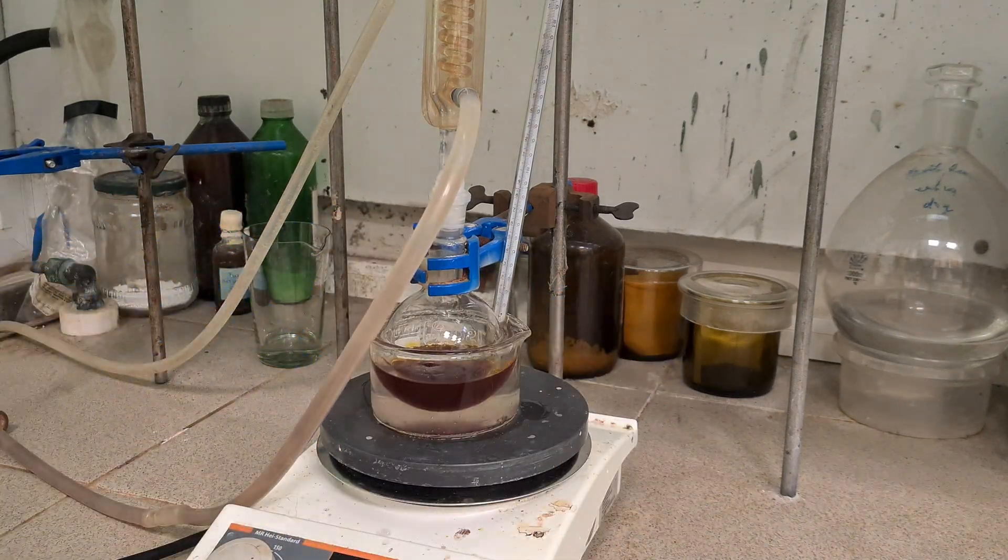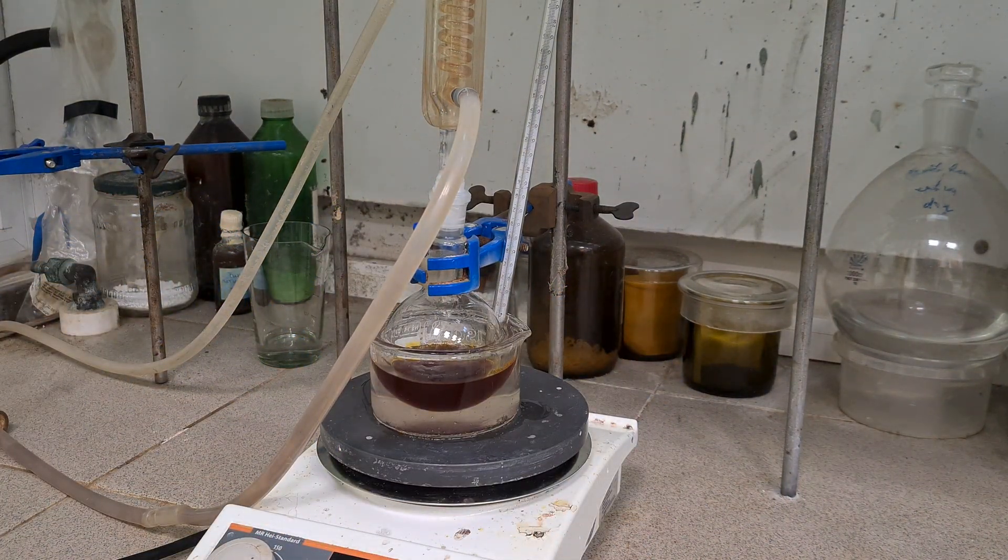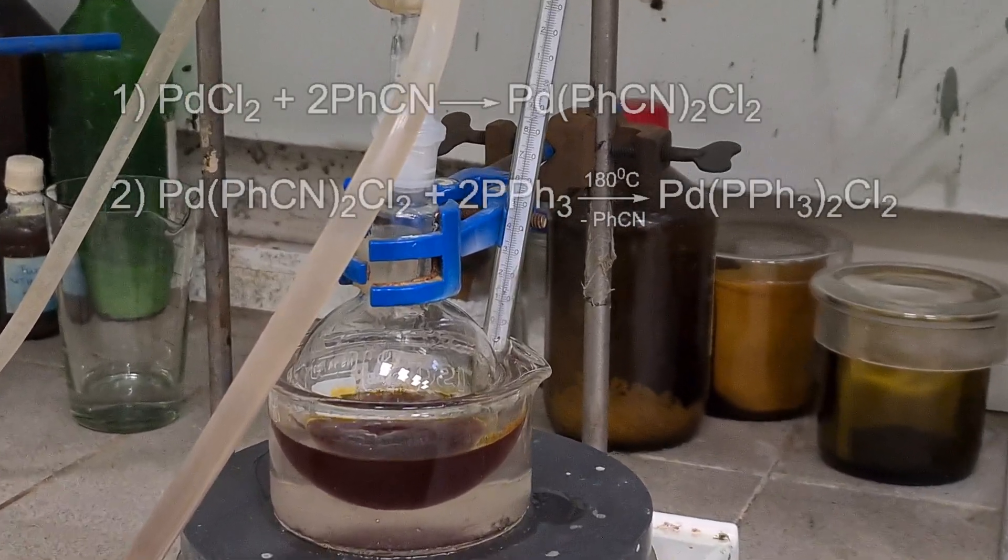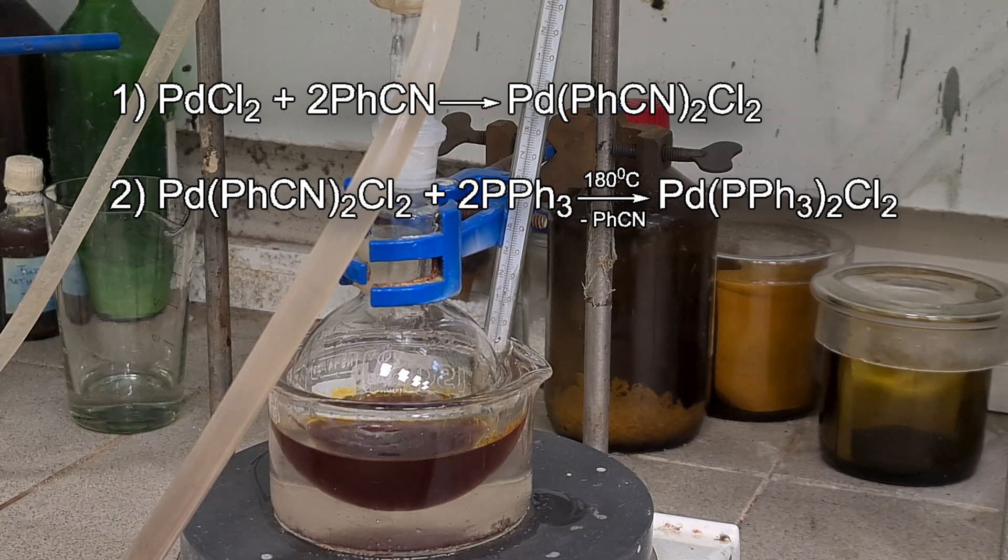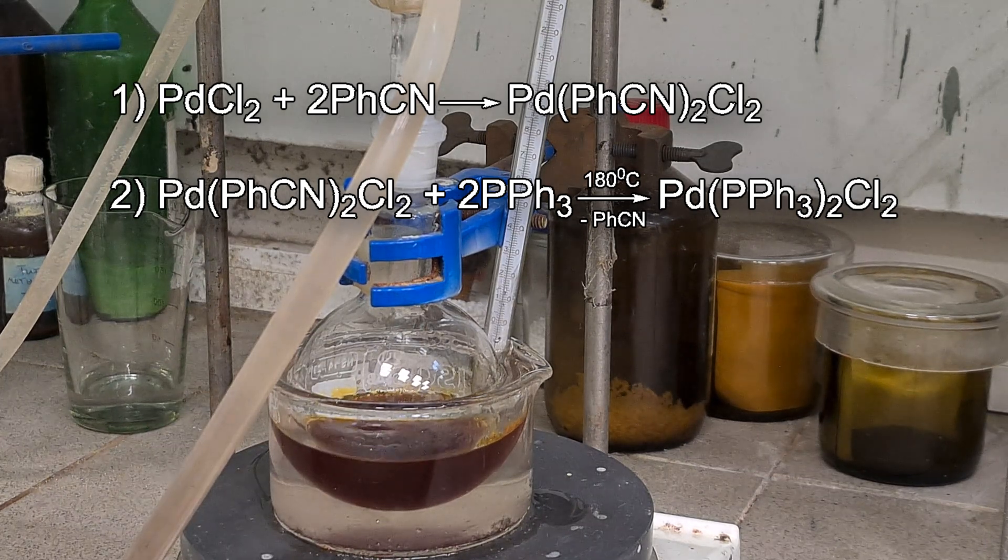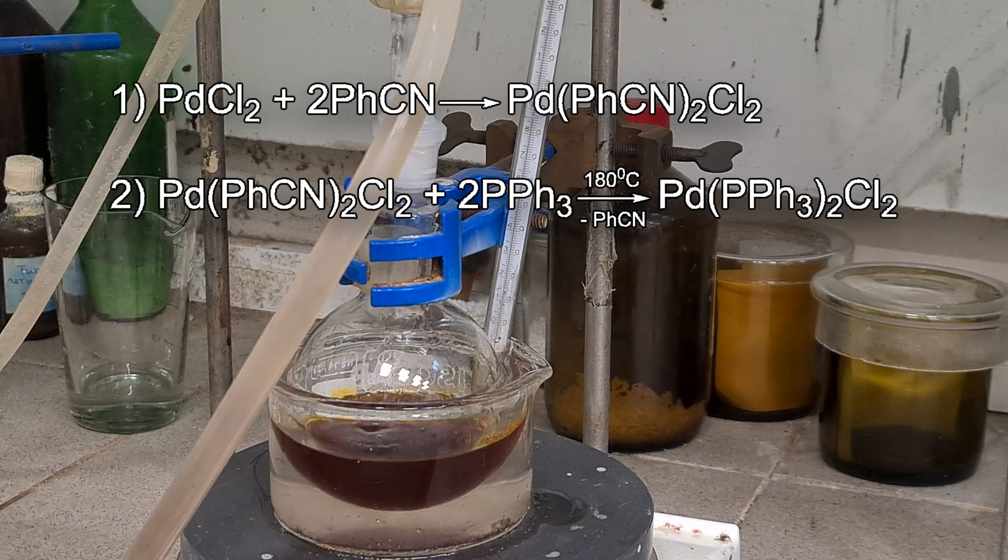Reaction mixture becomes dark red because of two-stage process. First, bis-cyano-palladium dichloride forming in solution. Next, ligand exchanging with triphenylphosphine leads to final product, bis-triphenylphosphine-palladium salt.